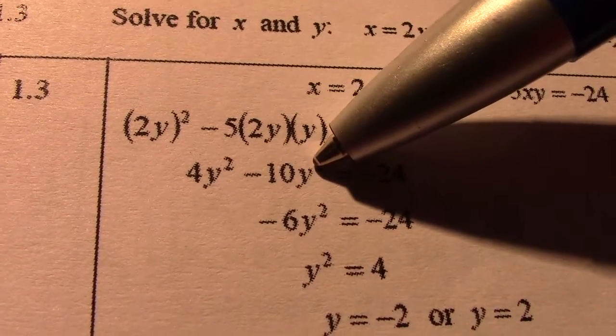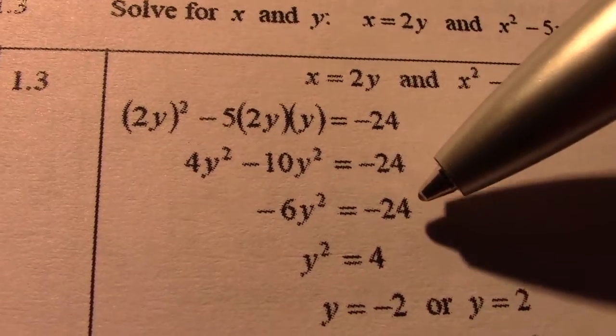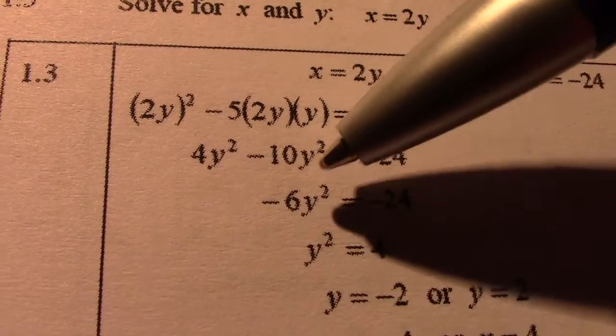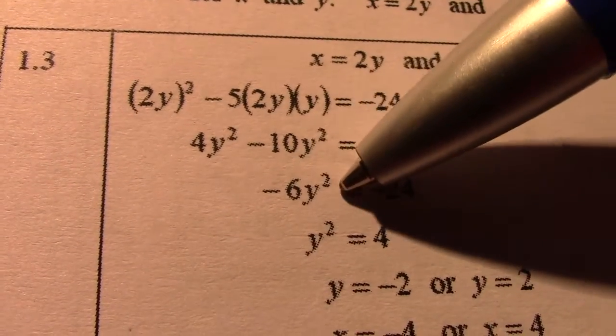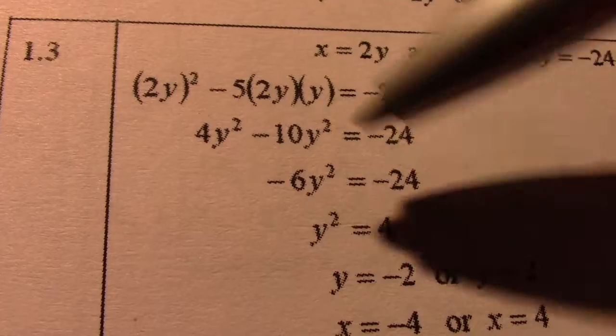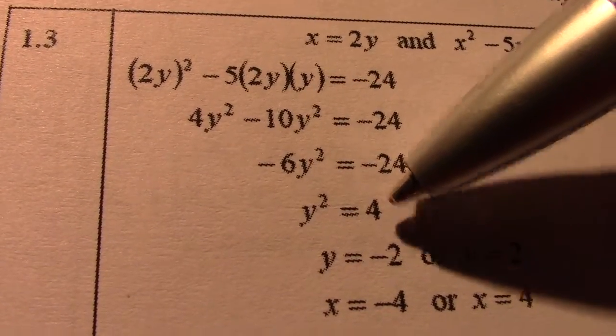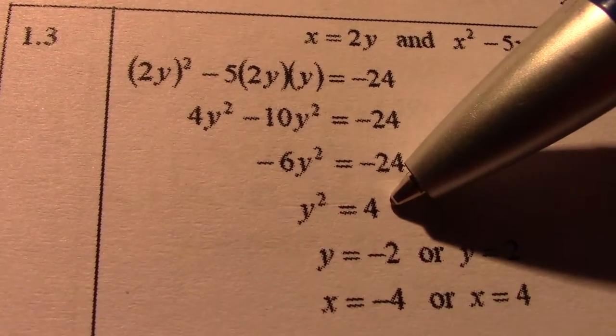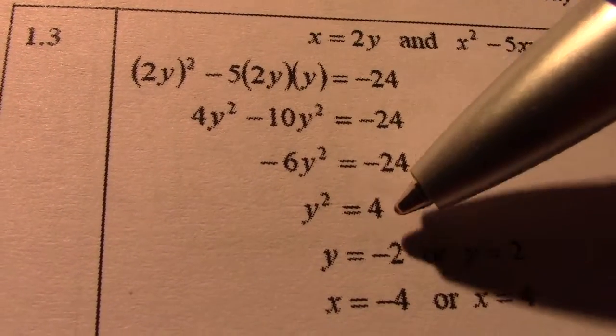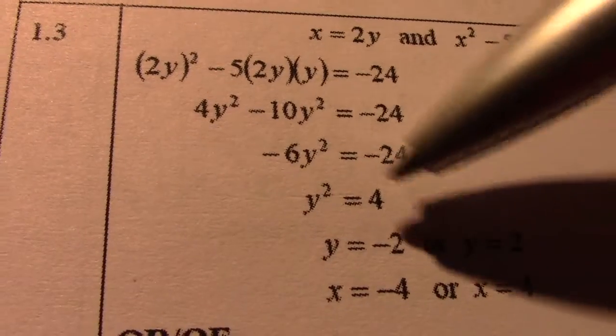And we always divide by whatever is in front of y. So negative 24 divided by negative 6 gives me 4. Take note, if you have a negative value there, I can't find the square root of a negative value. So then you should know you've made an error.